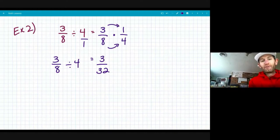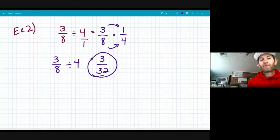And I know I'm already in simplest form right here because there isn't a common factor that can divide evenly into both three and 32.